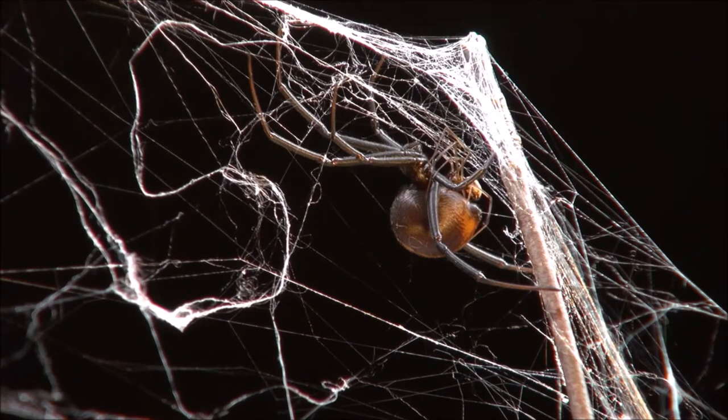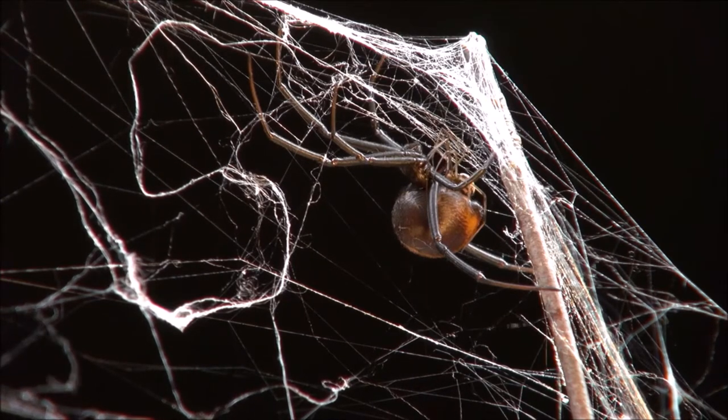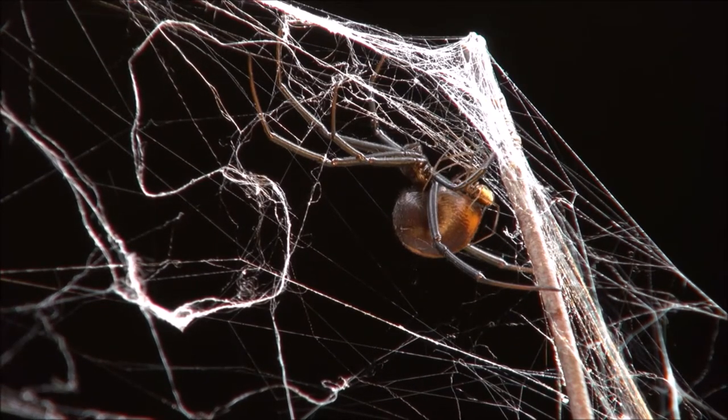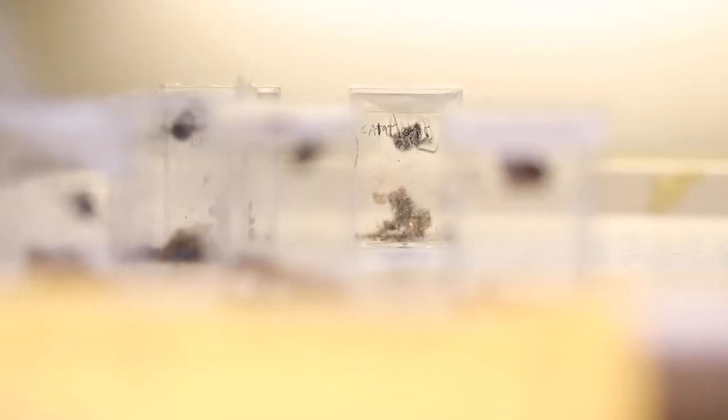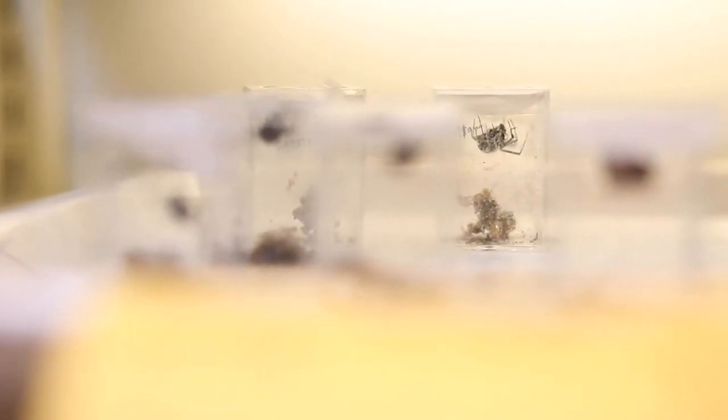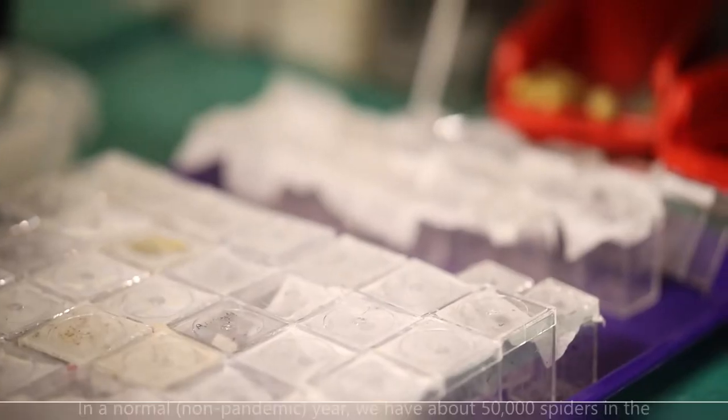But before we get to the stage where we can use them for our experiments, we have to rear them. Spiderlings are produced by the hundreds by females in little balls called egg sacks that they produce about once a month.